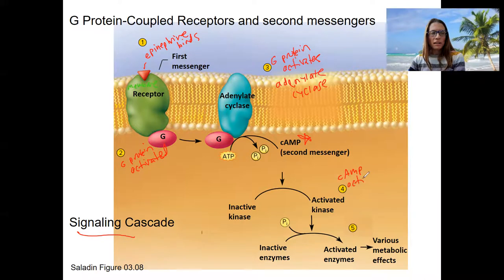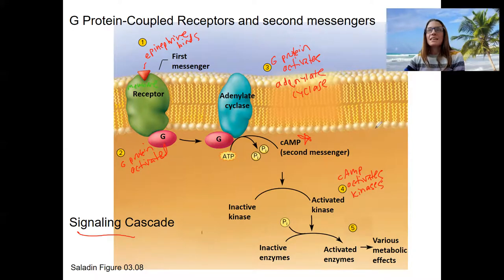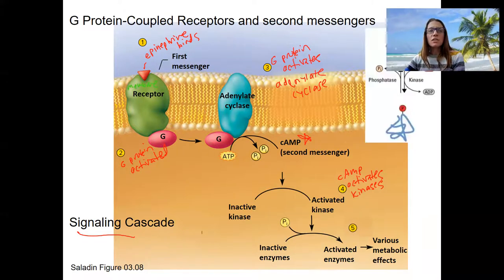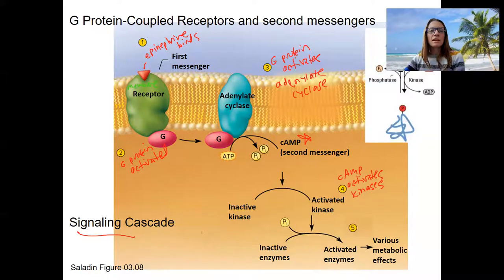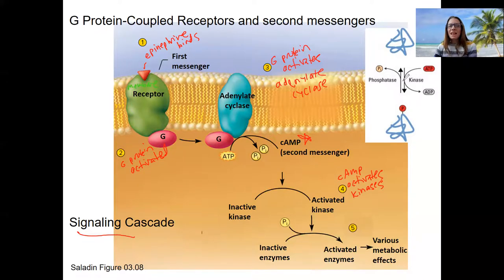cAMP is going to activate kinases. What are kinases? Kinases are enzymes, so other proteins that phosphorylate other proteins. I got a picture here that sometimes can help. This is a review from these different enzymes that either add or remove phosphate groups. We're going this way. So we're taking this inactive protein.